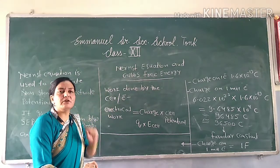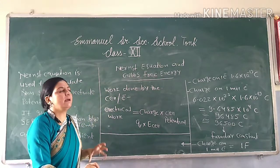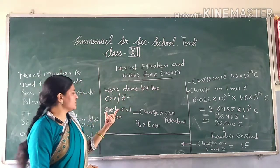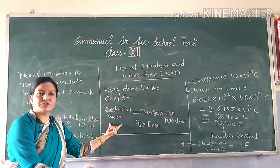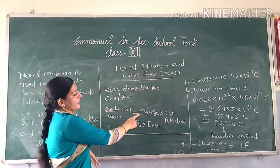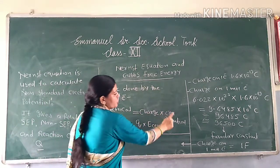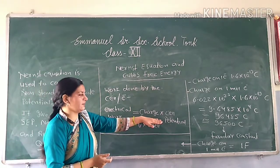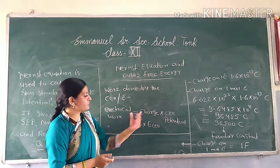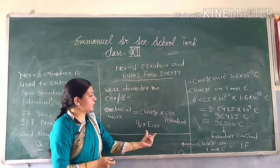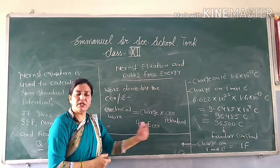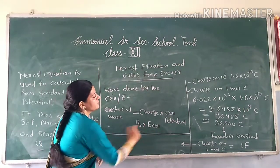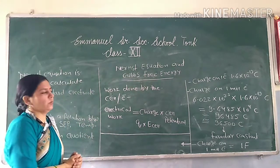There is some electrical work, so we will measure the work done by the cell and electrons, which we call electrical work. In physics, the formula of electrical work is charge multiplied by cell potential. So we measure the electrical work. We will measure the charge, and the electrical potential is the cell potential.